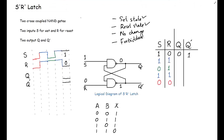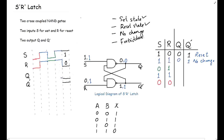Now coming to the second input combination: S=1 and R=1. We have Q'=1 and Q=0 from the previous state. With inputs 1,1 at the first NAND gate the output is 0, and then 0 and 1 at the second gate gives 1 from the truth table. So Q remains 0 and Q' remains 1. This is the No-Change state — the output stays the same as before.